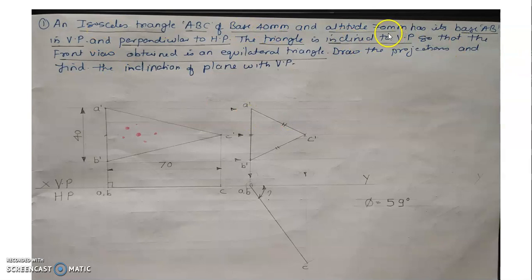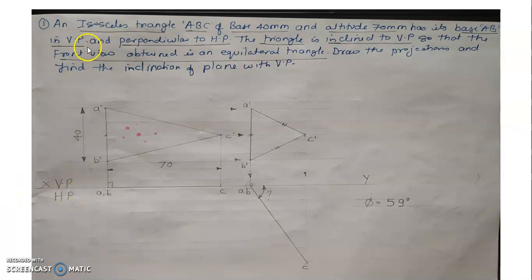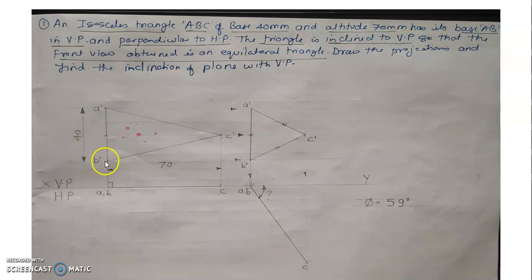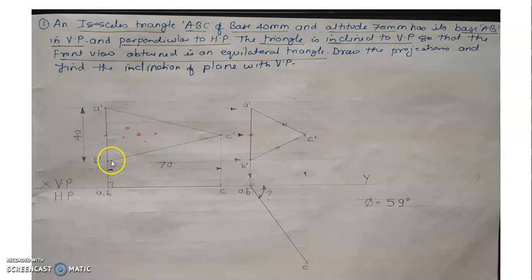The base is 40 mm, altitude is 70 mm, and base AB is in VP. First, draw a faint XY line, then plot VP and HP. Since AB is perpendicular to HP, draw a perpendicular line AB to the reference line measuring 40 mm and name it A' and B'. Then plot the midpoint of 40, that is 20. From this midpoint, the altitude distance is 70 mm — draw a horizontal line measuring 70 mm and mark the point as C'. Now connect A' to C' and B' to C'. Here we have created an isosceles triangle in front view.